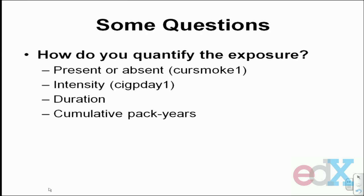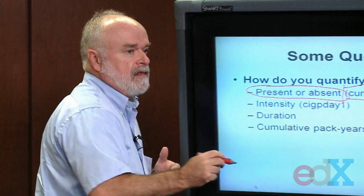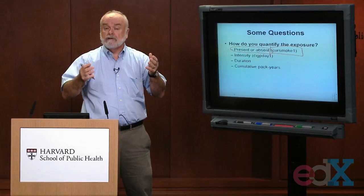Should it be just something like presence or absence? You have a variable called 'cursmoke1' at the 1956 exam, which labels a person as a smoker or a non-smoker, but it doesn't make a difference whether a person is smoking one cigarette a day or 60 cigarettes a day — he's still called a smoker. An alternative is to try to come up with an exposure that measures the intensity, the amount of smoking.